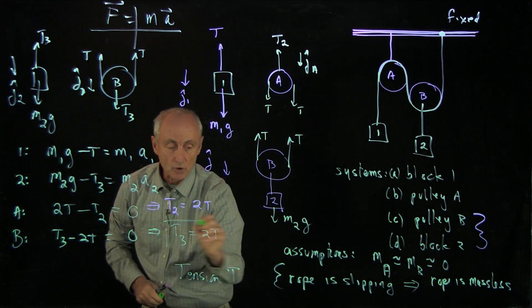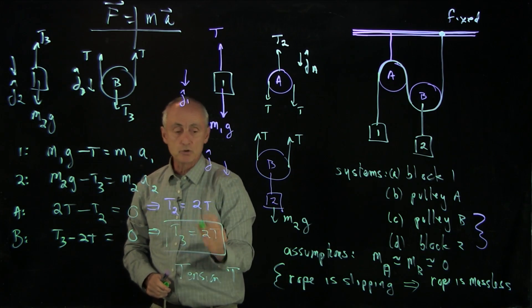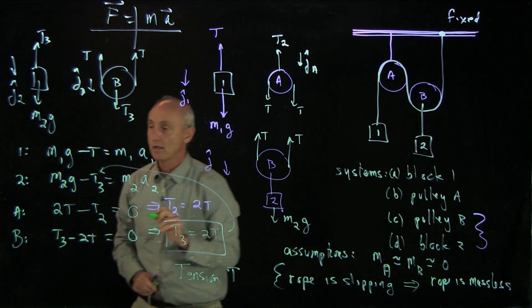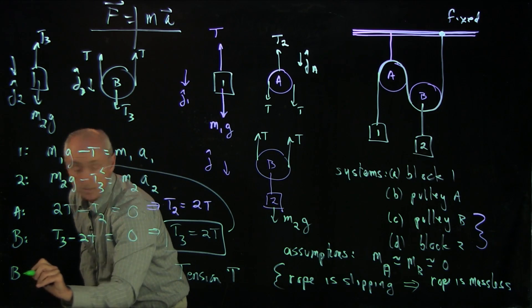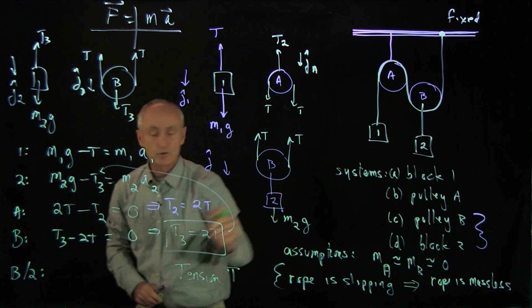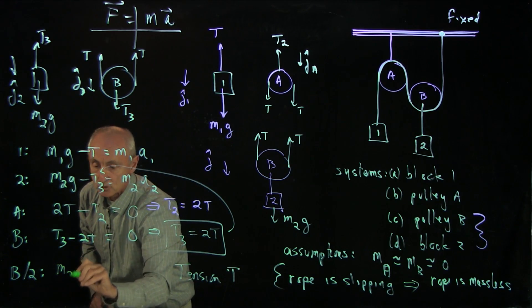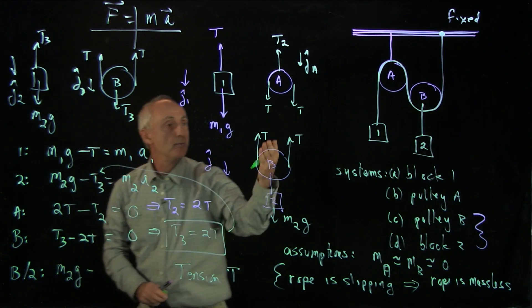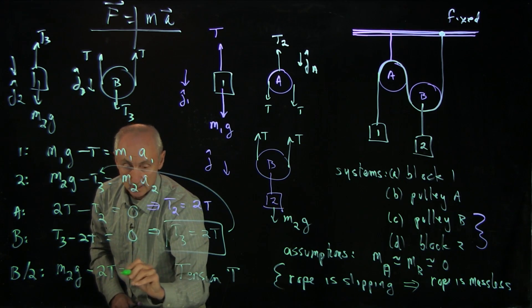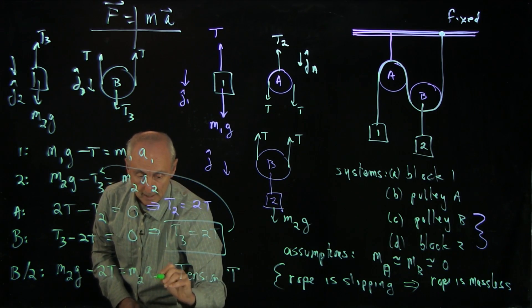Separately, when we saw that T3 equals 2T, and we apply it there, then if we consider a system B2 and look at our free body diagram, we have M2g minus 2T. And notice we have the same result there, 2T equals M2a2.